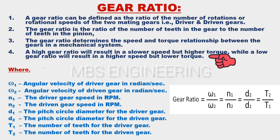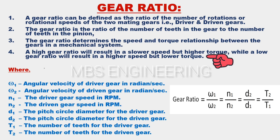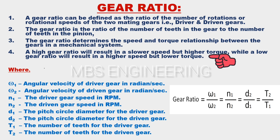A high gear ratio will result in a slower speed but higher torque, while a low gear ratio will result in a higher speed but lower torque.